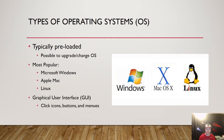The different types of operating systems you see here are typically pre-loaded on desktops or laptop computers. The three most popular are Microsoft Windows, Apple Mac, and Linux. All three use what's called a graphical user interface, or GUI, and that allows you to click icons, buttons, and menus on your computer.